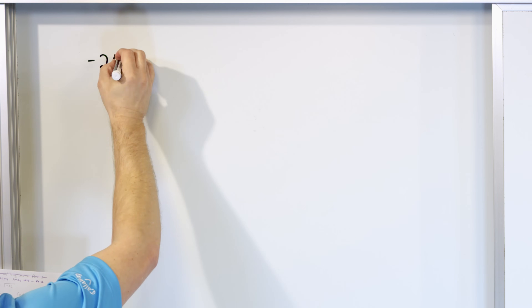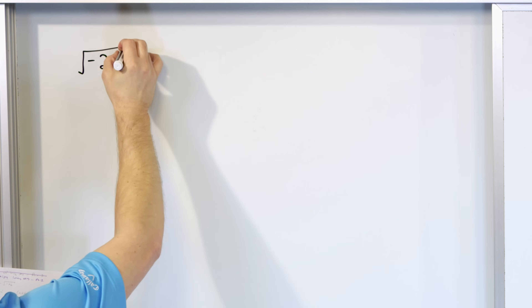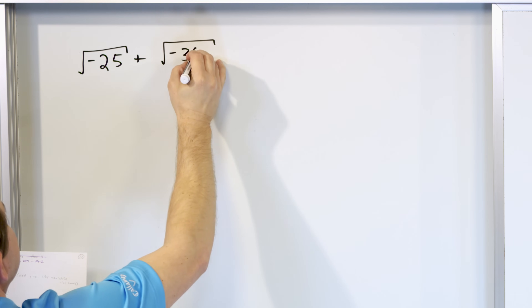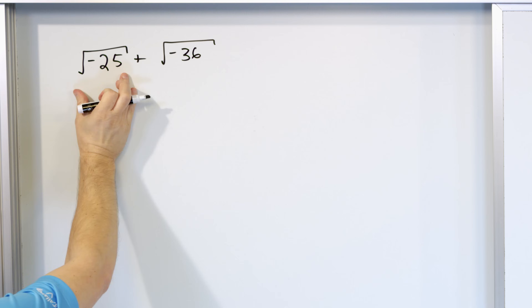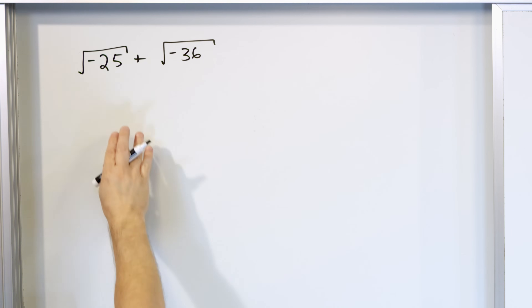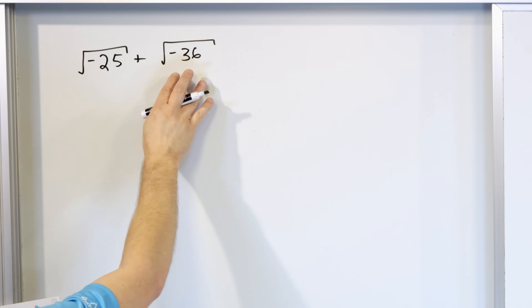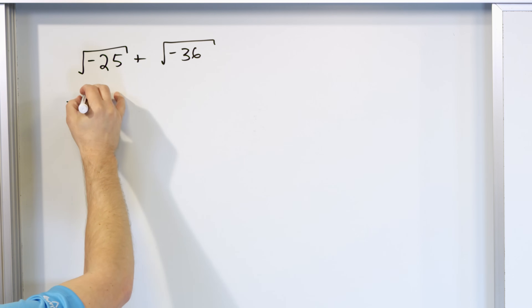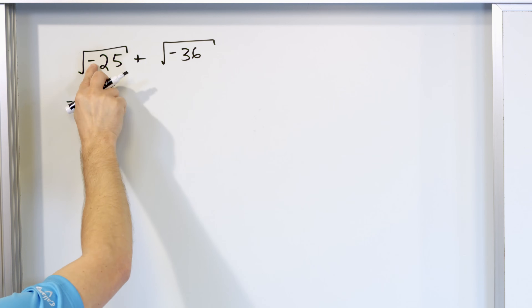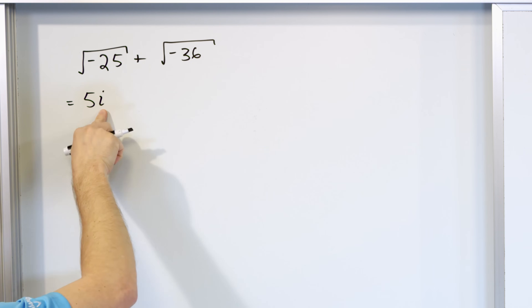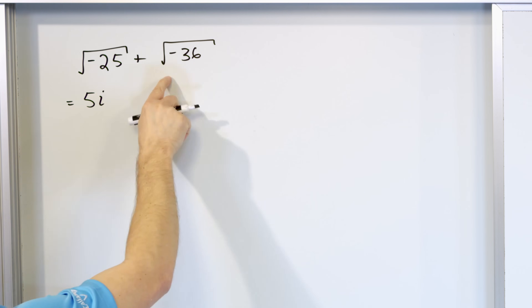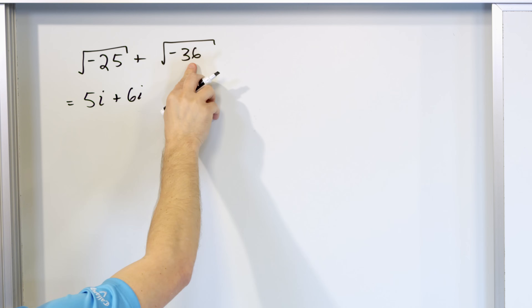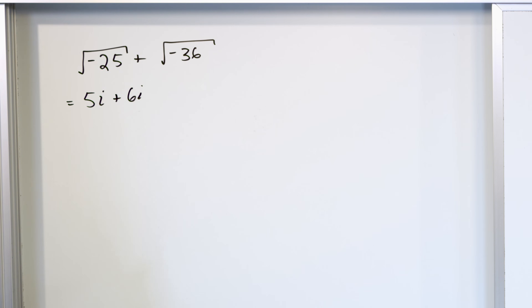Let's say we have the square root of negative 25, and we're going to add to that the square root of negative 36. The first thing we do is always tackle the radicals first. We know what the square root of 25 is and the square root of 36 is, so this evaluates to 5i and this one gives you 6i. Square root of 36 is 6, and square root of negative 1 is i.